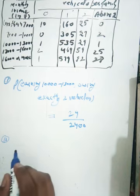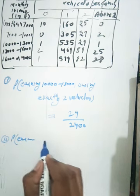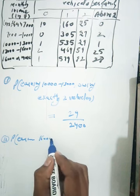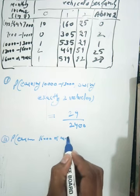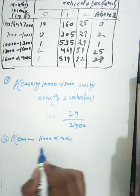Part two: earning 16,000 and more, owning exactly one vehicle.